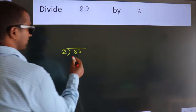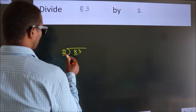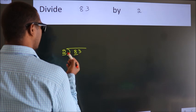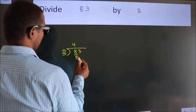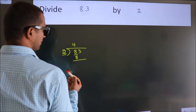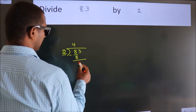here we have 8, here 2. When do we get 8 in 2 table? 2 fours 8. Now, we should subtract. We get 0.